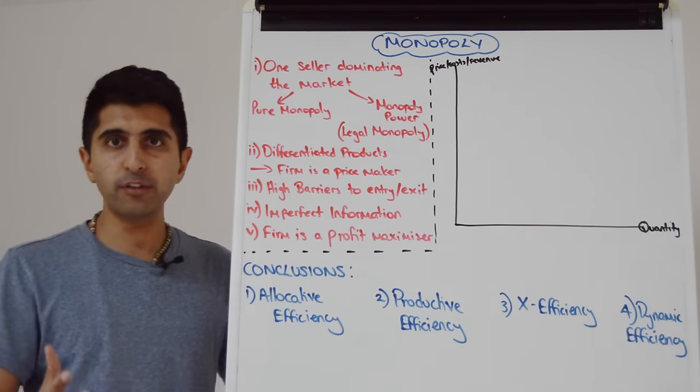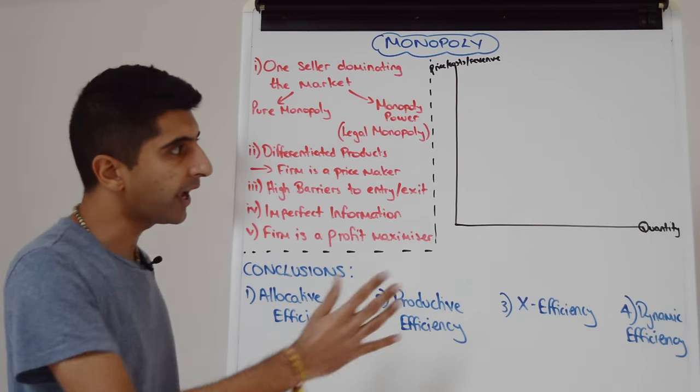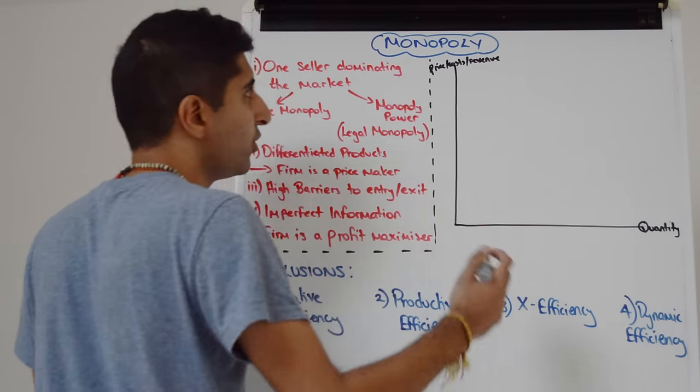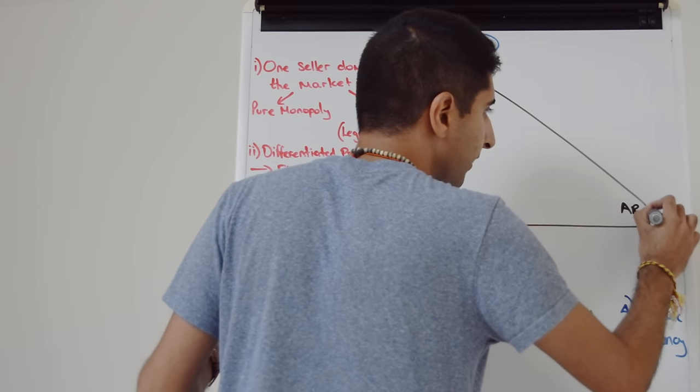So understanding all of these key characteristics of monopoly, let's understand how monopolists behave going to our diagram. Well, knowing that this firm is a price maker, they're going to have downward sloping revenue curves. So average revenue is going to look like that, that is the demand curve.